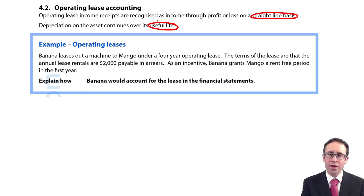So again our focus is going to be on the SFP, profit or loss. It says Banana leases out a machine to Mango under a four-year operating lease. So it specifically says it is an operating lease in the question. In a longer narrative style question you might have to identify with additional information that it is an operating lease.